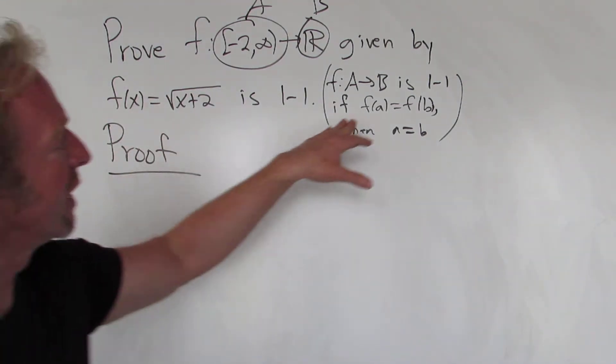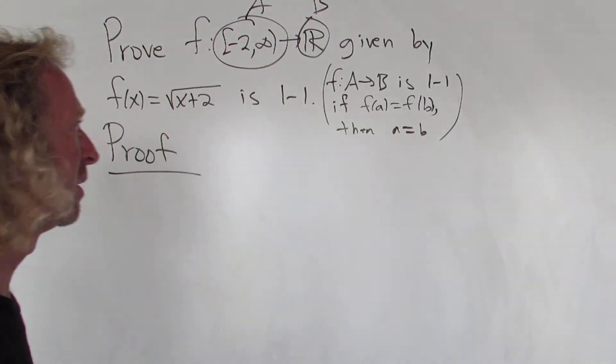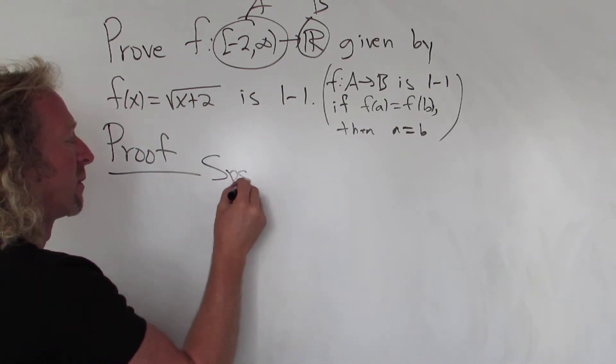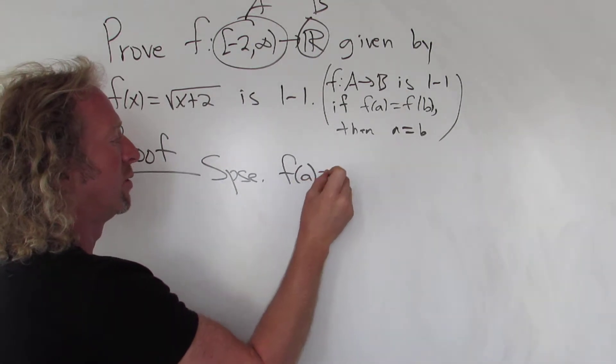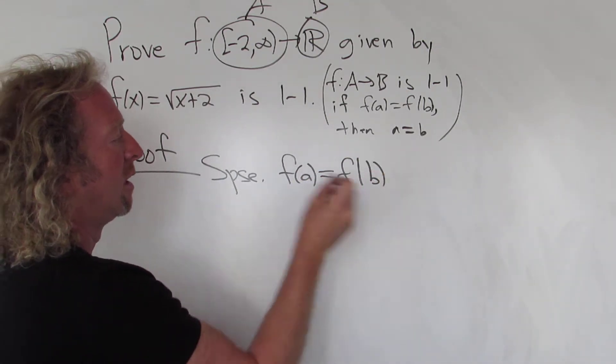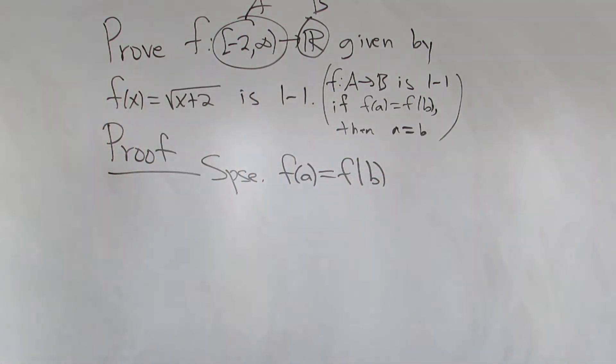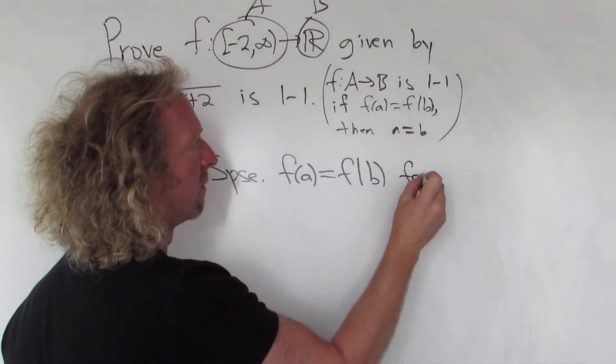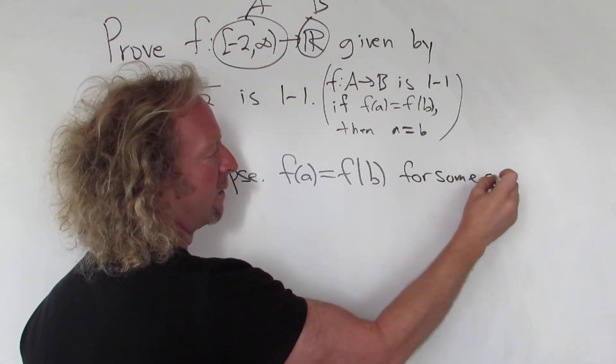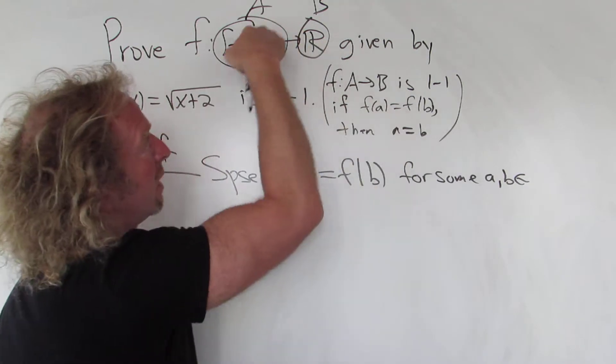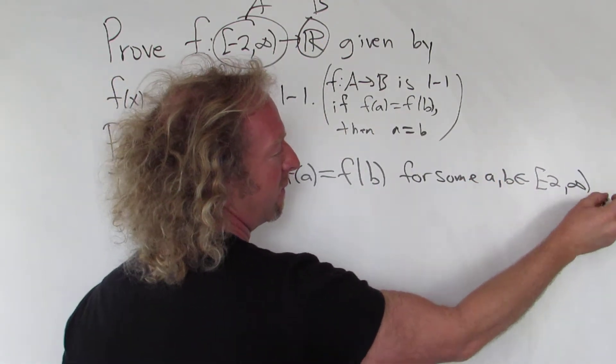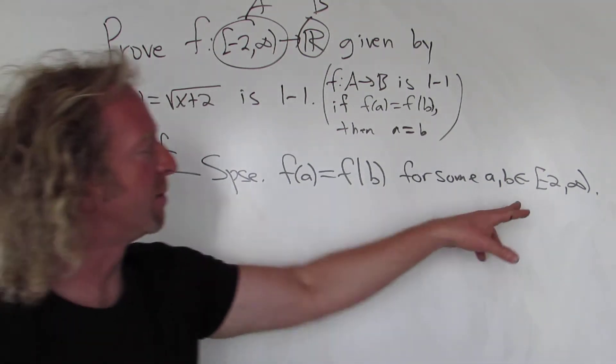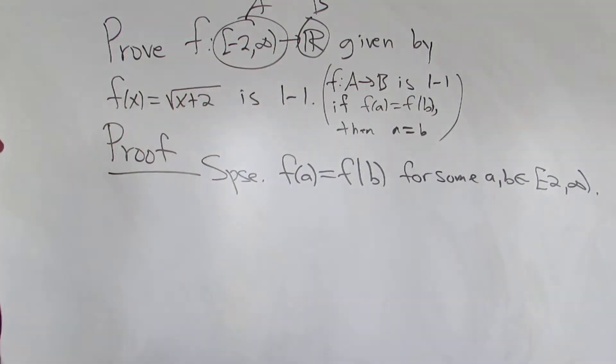So we'll start by supposing that f(a) is equal to f(b). Suppose f(a) is equal to f(b) for some a, b in capital A. So for some a, b in this set here, negative 2 to infinity. Just for some a, b in this set.